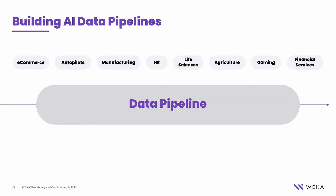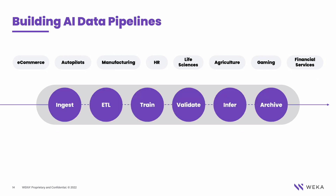As a marketing guy, we like to think about data pipelines as something very simple and easy. These data pipelines serve a wide variety of applications — e-commerce, autopilot, manufacturing, HR, life sciences, you name it. Each data pipeline has a series of steps: ingesting the data, transforming it, normalizing it, training on that data, validating it, running inference on it, and then archiving it in case you need to use it again. This is a great marketing slide.